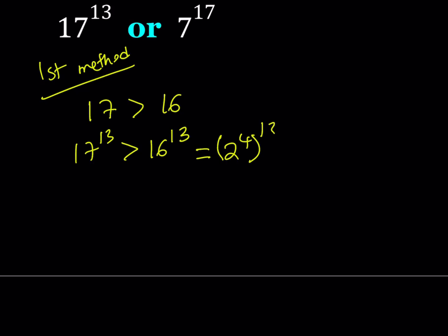Since 16 can be written as 2 to the fourth power, then I can just raise it to the 13th. And that's going to give me 2 to the power of 52 because we're supposed to multiply 4 times 13. So 17 to the 13th power is greater than 2 to the 52nd power.